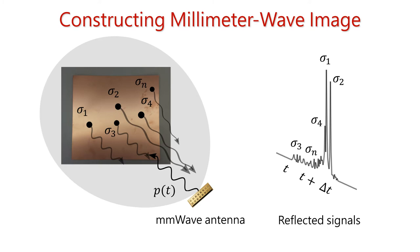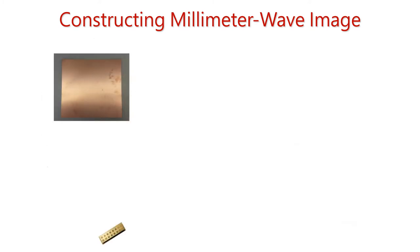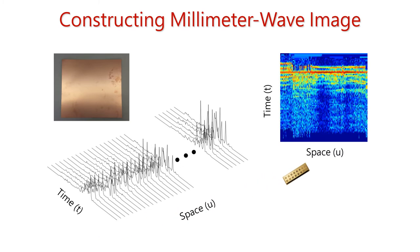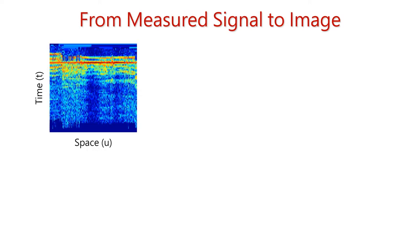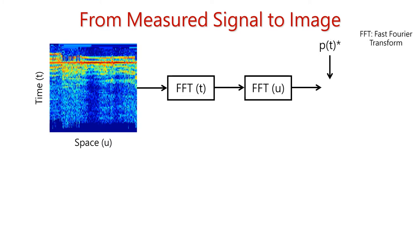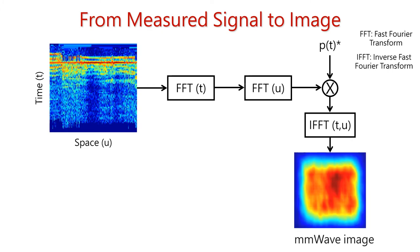To overcome this challenge, today's millimeter wave systems use a robotic controller to precisely move the antenna in a linear fashion and collect the two dimensional signal in space and in time. Then this measured reflected signal goes through a series of signal processing steps to create a millimeter wave imaging - two successive fast Fourier transforms followed by a matched filtering followed by an inverse fast Fourier transform.